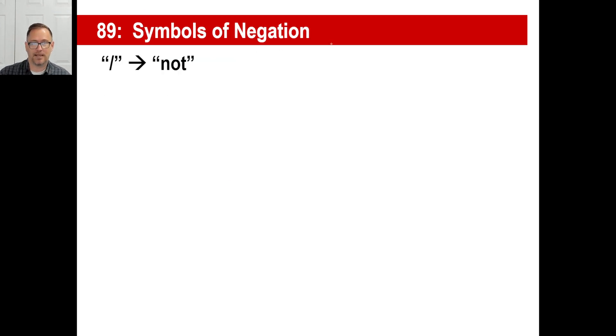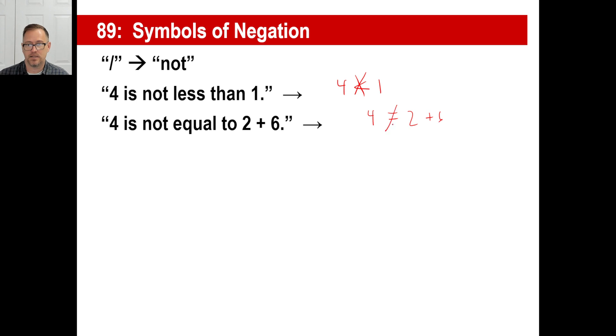So this little symbol means not. If you see something like this, let's do a couple. If we go four is not less than one, which it isn't, right? Four is not less than one. Well, it's not less than one. We might do it like this. How about this one? Four is not equal to two plus six. Four is equal to two plus six. No, it's not. Four ain't equal to two plus six, right? Seven is not greater than or equal to ten. It isn't, is it? So it's not.